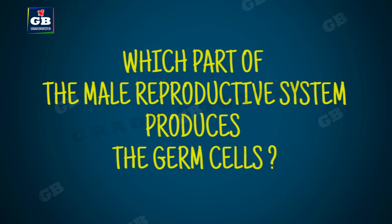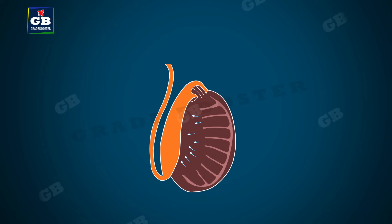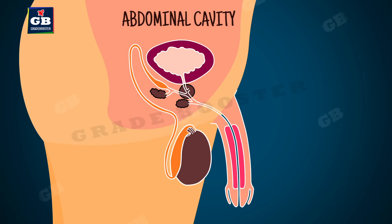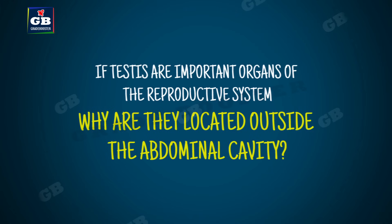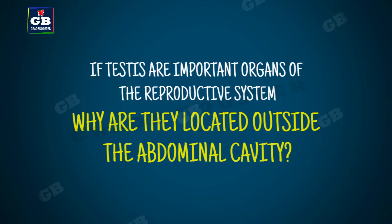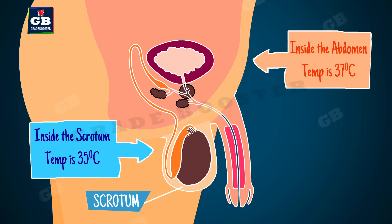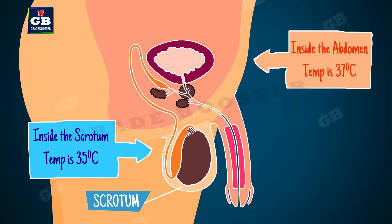The formation of germ cells, or sperms, takes place in the testes. They are present outside the abdominal cavity in a sac-like structure called the scrotum. The testes are located outside the abdominal cavity because sperm formation requires a lower temperature than the normal body temperature.